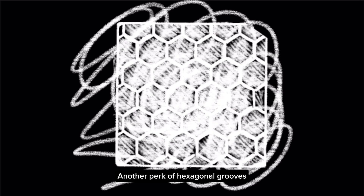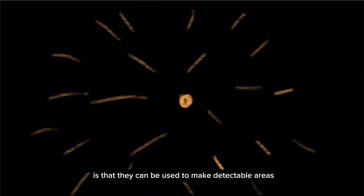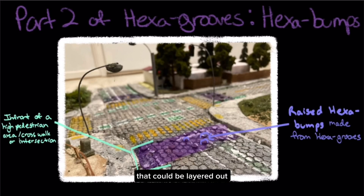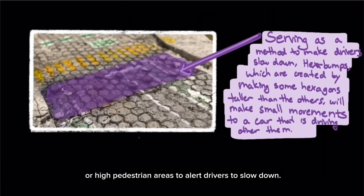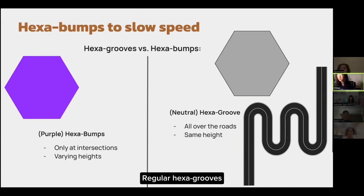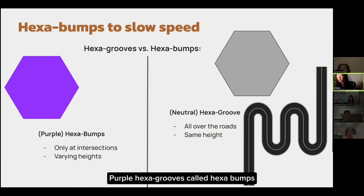Another perk of hexagonal grooves is that they can be used to make detectable areas to signal drivers to slow down. The hexagons could be individually raised in increments to create a bumpy surface that could be layered out in front of busy intersections or high pedestrian areas to alert drivers to slow down. These would behave just like the yellow bumps on sidewalks or in front of grocery stores. Regular hexagrooves would be evenly spaced throughout all roads and all be the same height. Purple hexagrooves, called hexabumps, will only be at intersections and vary in height, as shown.